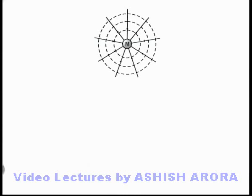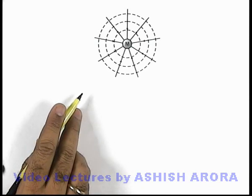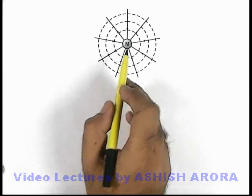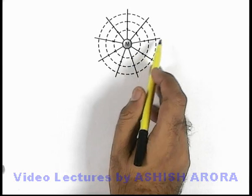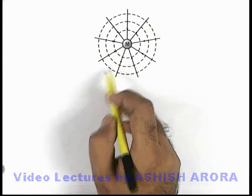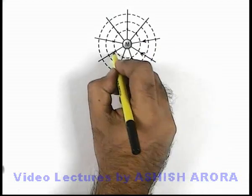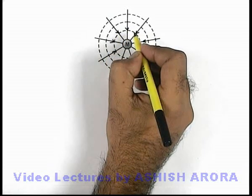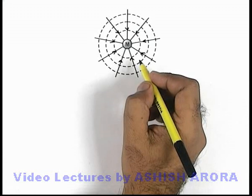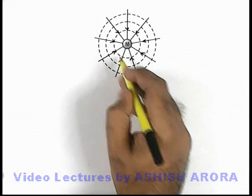Now if we discuss the configuration of gravitational field lines in the surrounding of a point mass, the situation will look like this picture. Here there is a mass M, and in its surrounding the gravitational field will exist in the radially inward direction. These straight lines directed towards the center of mass M represent the gravitational field lines. In its surrounding, with no other mass present, the gravitational field lines are straight.